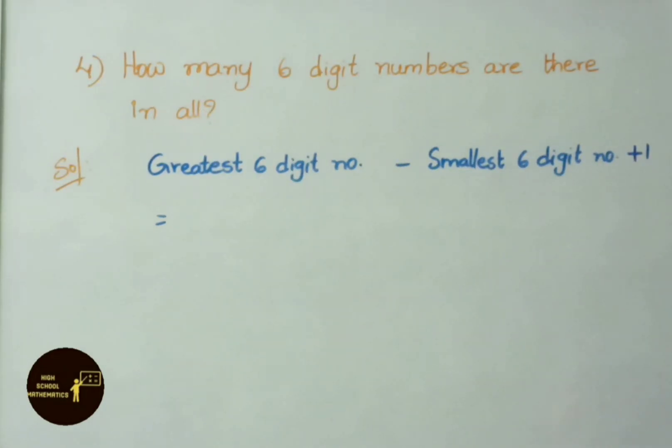See fourth sum now. How many 6 digit numbers are there in all? See the solution. Greatest 6 digit number minus smallest 6 digit number plus 1. We get the answer.